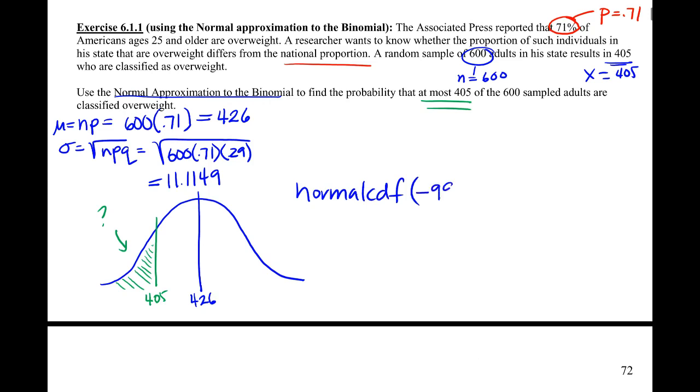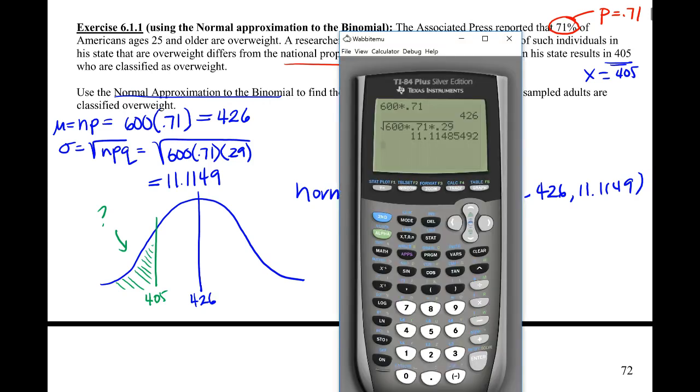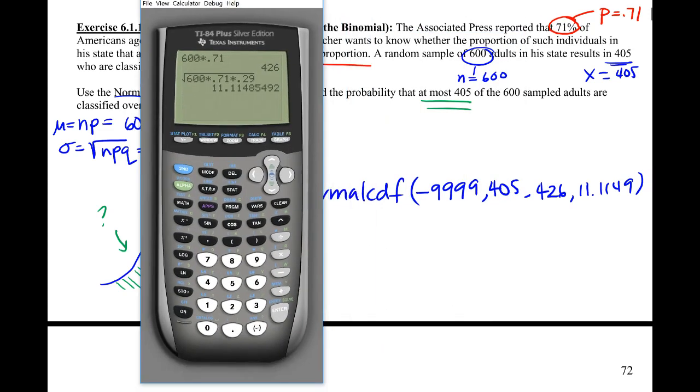Our lower bound is our negative crap ton of nines, even though technically there can't be less than zero. Upper bound is 405, and then our mean and our standard deviation. Should be something less than 50%. In fact, we can kind of see we're almost two whole bunny hops away, so we're looking at something probably around 2%. Let's see what we actually get.